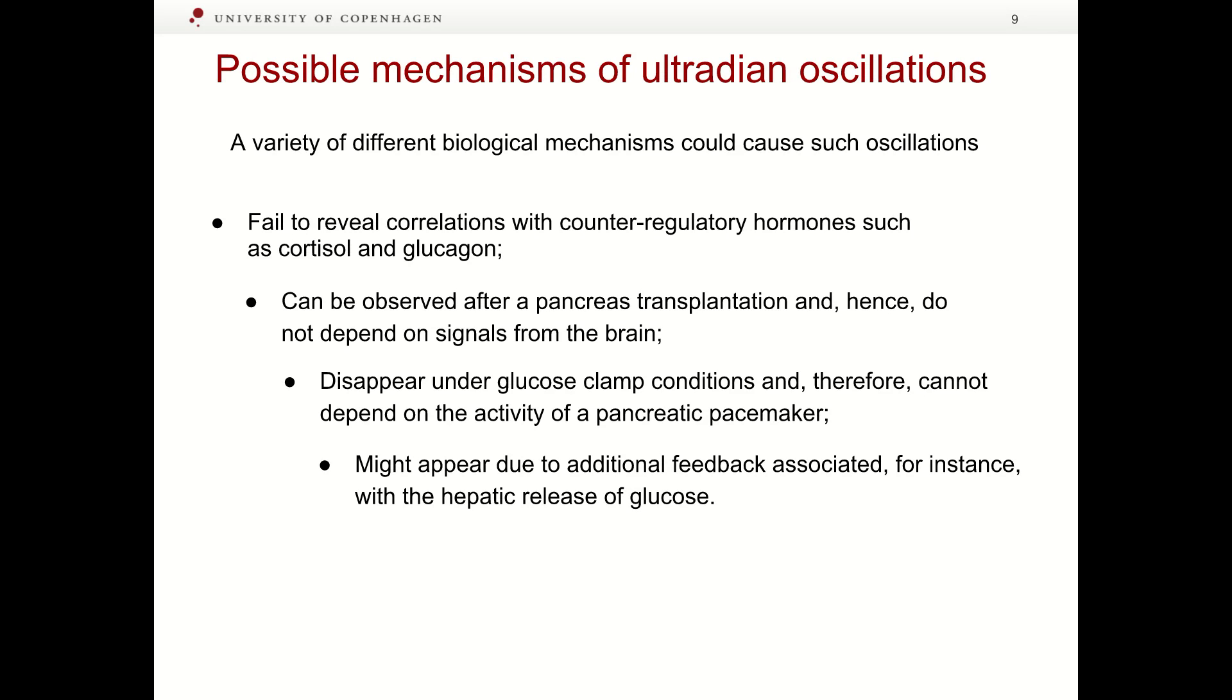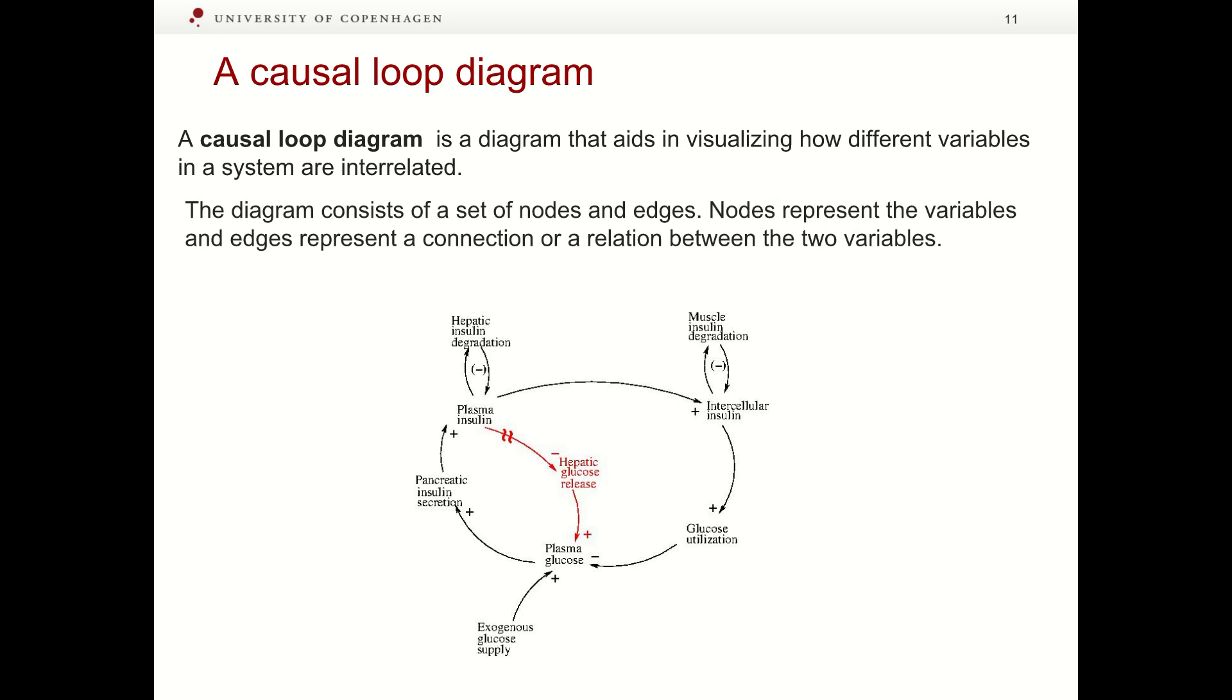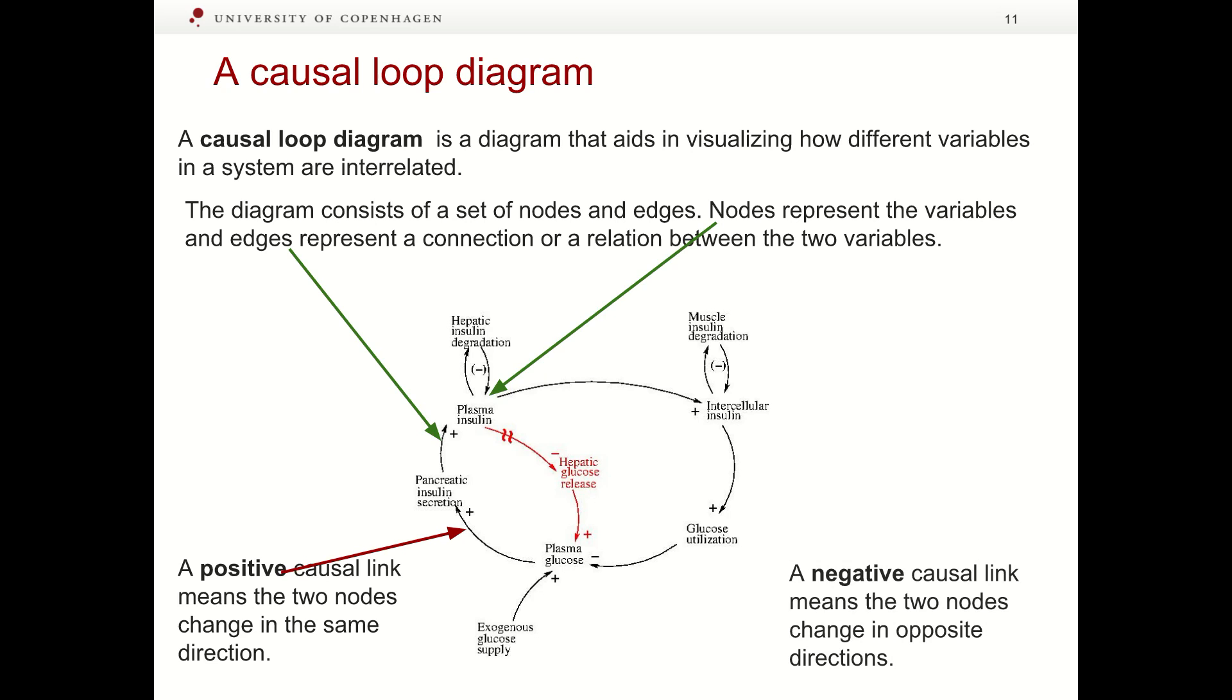A causal loop diagram is a diagram that helps to visualize how different variables in a system are interrelated. The diagram consists of a set of nodes and edges. Nodes represent the variables. Edges represent a connection or relation between the two variables. Positive link means that if the node in which the link starts increases, the other node increases as well, and vice versa. Negative link means that if the node in which the link starts increases, the other node decreases, and vice versa.